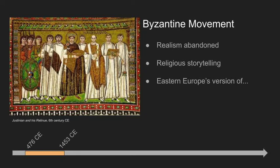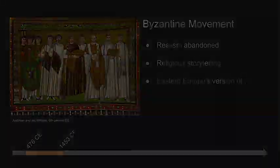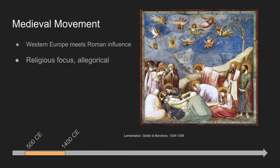The West experienced the medieval movement — also heavily influenced by the Roman Empire's acceptance and encouragement of Christianity. The medieval movement was entirely religiously focused. This is the Western European version of the Byzantine movement, the two of which bridged the European Dark Ages from the fall of the Roman Empire to the Renaissance. Similarly, realism was abandoned and allegory prevailed. Few advances in the arts were made during this period, which was markedly ended by the beginning of the Renaissance.